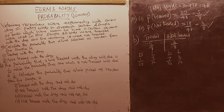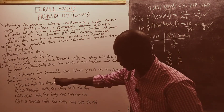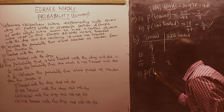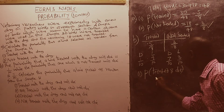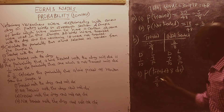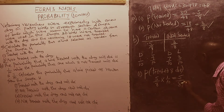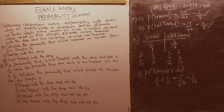From here we can calculate the answers. Roman numeral 1 of Part B: the probability that a bird is treated and will die. Being treated is 5 over 8, and the probability of dying is 1 over 10. Multiplying the numerators: 5 times 1 gives 5; multiplying the denominators: 8 times 10 gives 80. Simplifying by the common factor 5, we get 1 over 16.